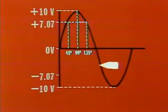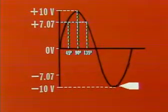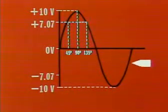During the negative alternation, the voltage amplitude varies in the same manner, but with opposite, that is, negative polarity.